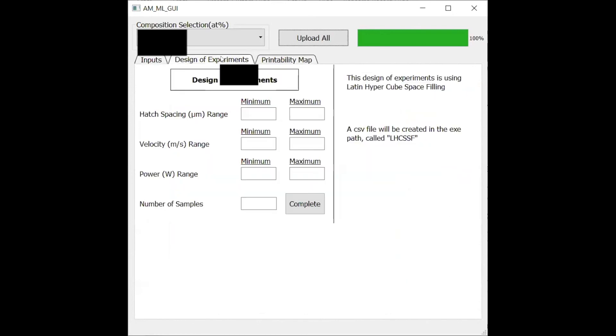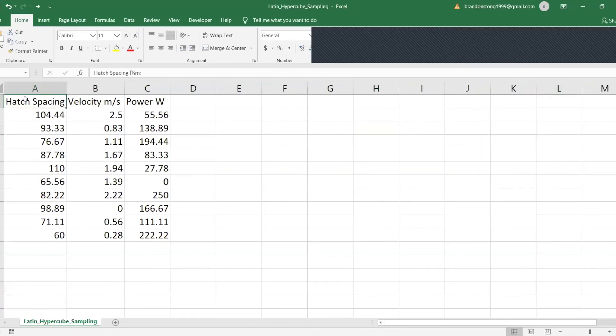After that you can look at the design of experiments and put values that you want those experiments to be based around and how many samples that you want to create. After it's done it'll create a CSV file with all these values here, and these are all 10 of the values that you want to create.